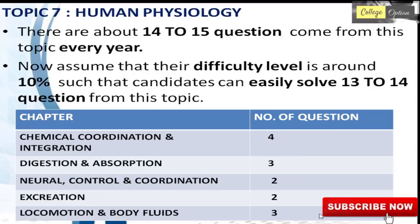The seventh topic is Human Physiology, with around 14 to 15 questions — the most questions asked in zoology. The difficulty level is around 10%. There are five chapters: Chemical Coordination and Integration with 4 questions, Digestion and Absorption with 3 questions, Neural Control and Coordination with 2 questions, Excretion with 2 questions, and Locomotion and Body Fluids with 3 questions. This is based on the last 5 years.